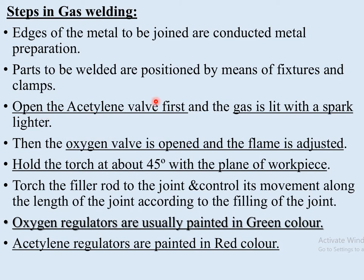Initially, we open the acetylene gas first by operating the regulator. The gas comes through the nozzle and is lit by means of a spark lighter, and it begins to flame. At that time, the oxygen valve is opened slightly and the flame is adjusted. For the welding process, on a flat surface, we hold the torch at an angle of 40 degrees.